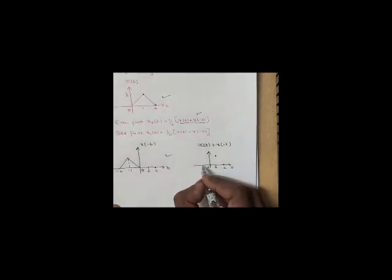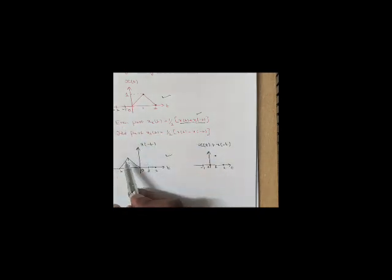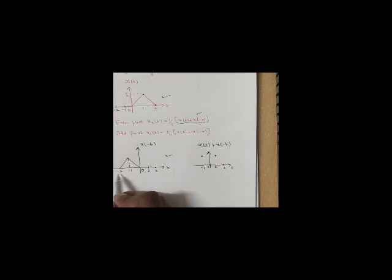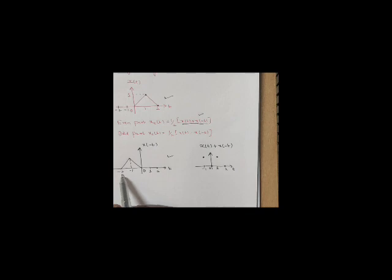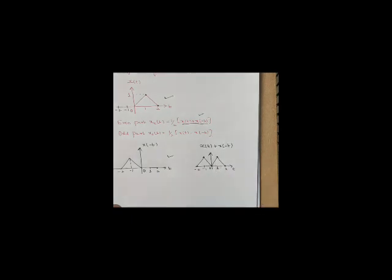At t=-1, there is no signal in x(t) at -1 or -2, but in x(-t) we have amplitude 1 at t=-1. Adding 0 and 1 gives amplitude 1 at t=-1. At t=-2, x(t) is 0 and x(-t) is 0, so I get 0. Since this is a continuous signal, I connect all points — the amplitude is 1.